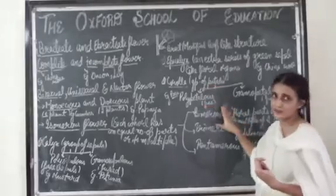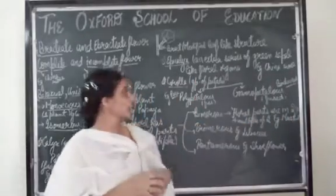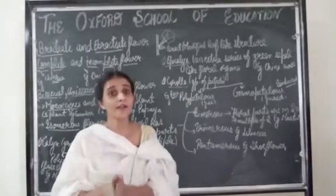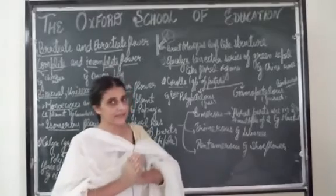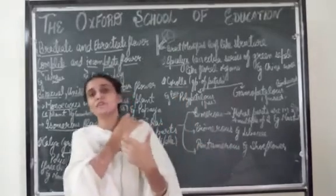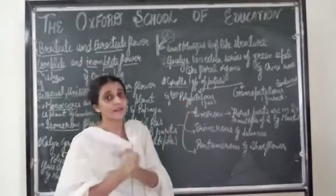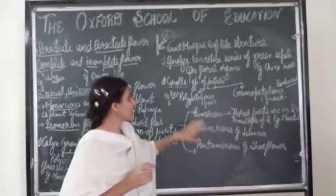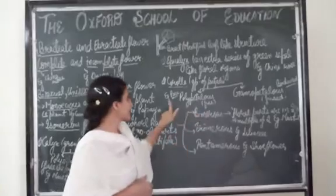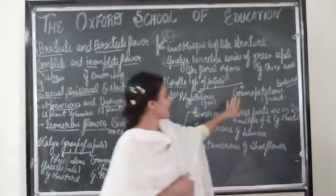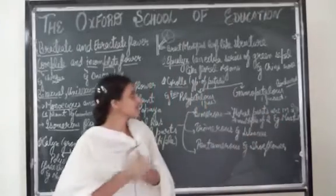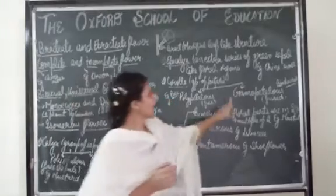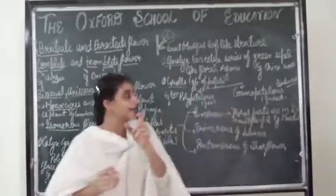Next is corolla, which is the group of petals. The main function of corolla is attraction. They play a major role in pollination because by attracting insects, insects transfer pollen from one flower to the stigma of another flower. If petals are free, they are known as polypetalous — example is rose. If the petals are fused with each other, they are known as gamopetalous — example is datura. I hope you are clear with these terms.